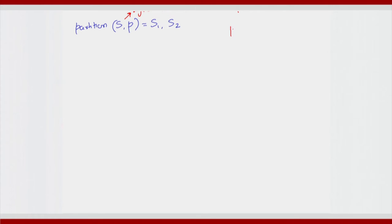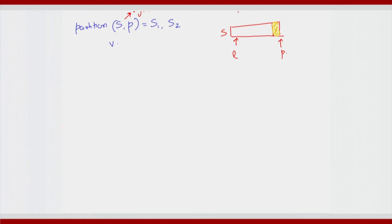What we mean is this is position l and this is position p, and our goal is to have all s1 on the left and s2 on the right. We will assume that the pivot is with respect to this last element, and let us call it v. So the first thing we will do is set v to the value of s at position p, and assume that p is the last position.